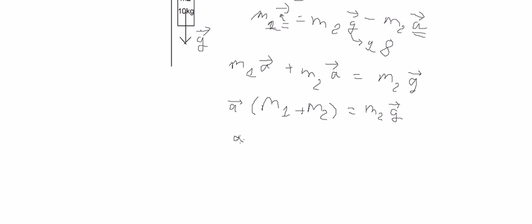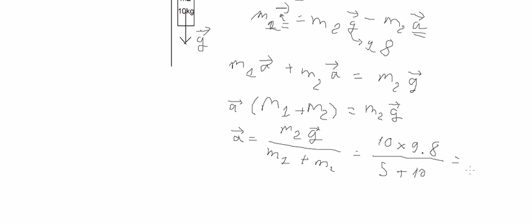So we have M2 multiplied with G divided by M1 plus M2. M1 is about 5 plus 10. You get about 6.533 meters per square second.